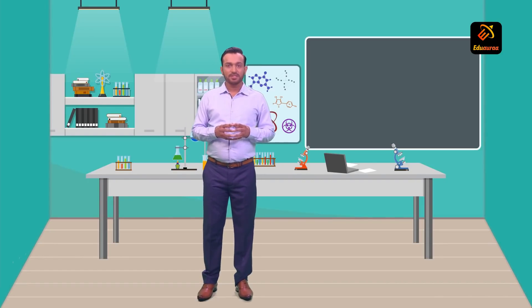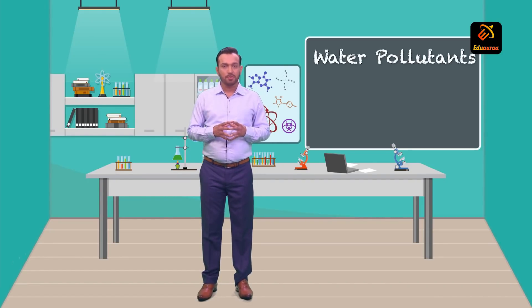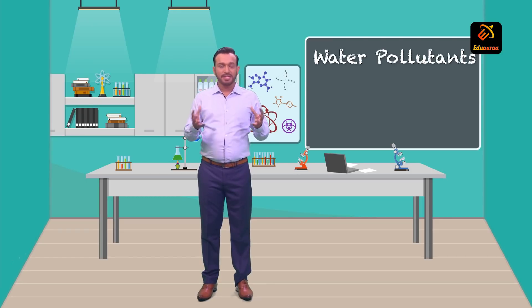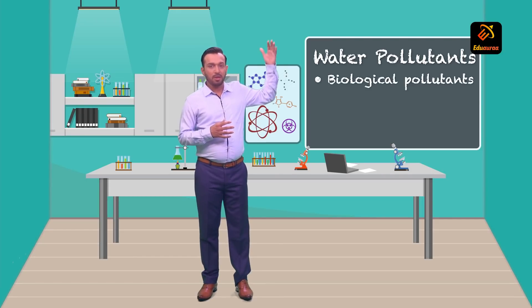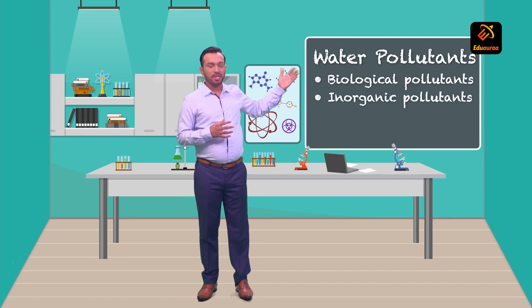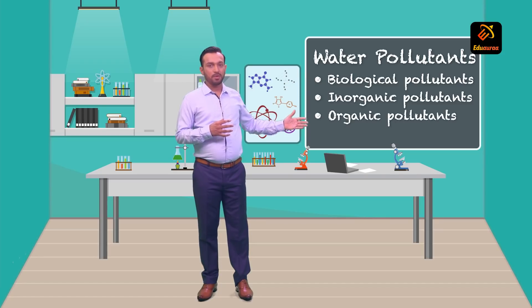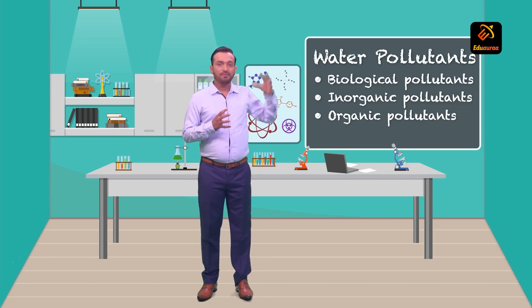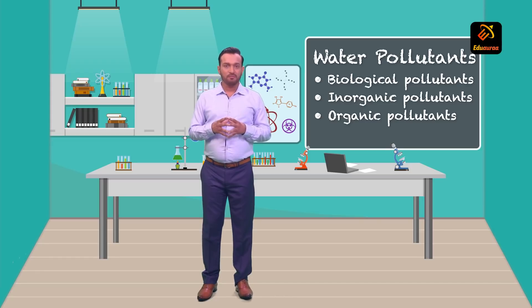Let us understand the various types of water pollutants. There are three types: biological pollutants, inorganic pollutants, and organic pollutants. Let us understand each type.